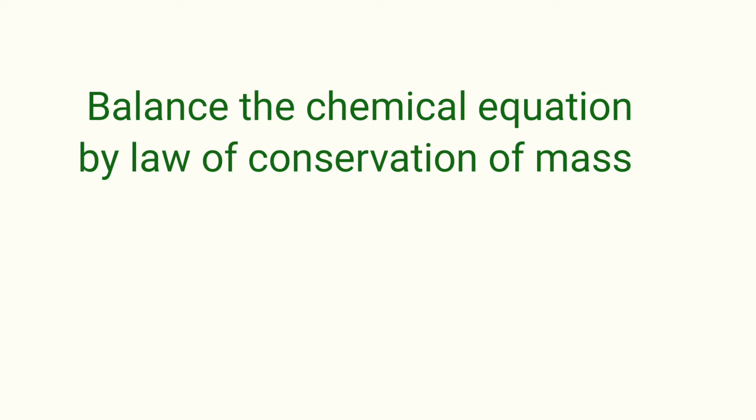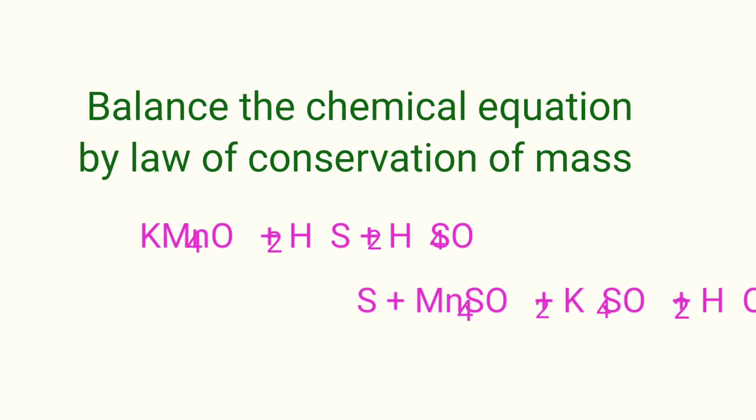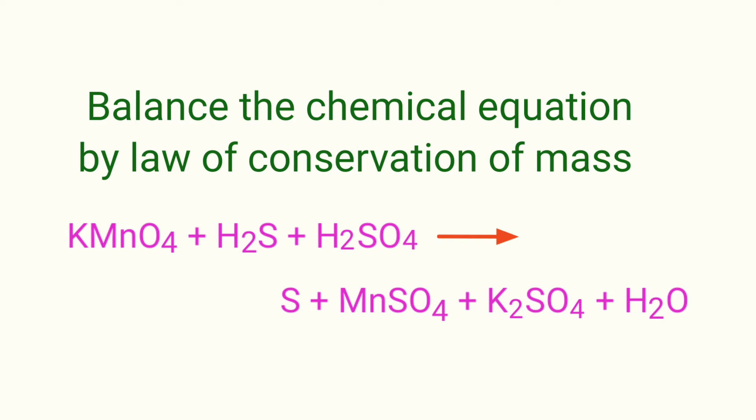Balance the Chemical Equation by Law of Conservation of Mass. Potassium permanganate plus hydrogen sulfide plus sulfuric acid gives us sulfur plus manganese sulfate plus potassium sulfate plus water.